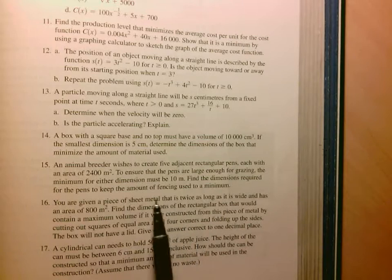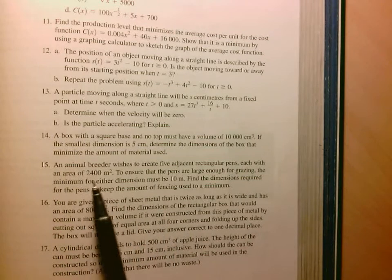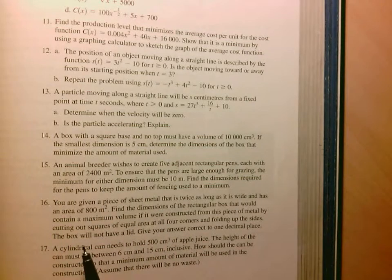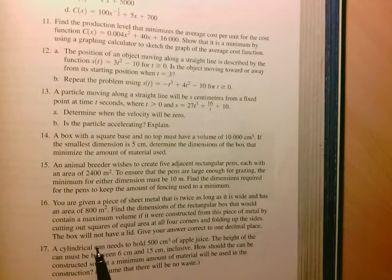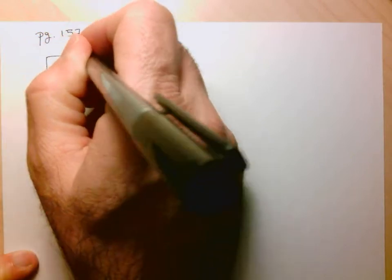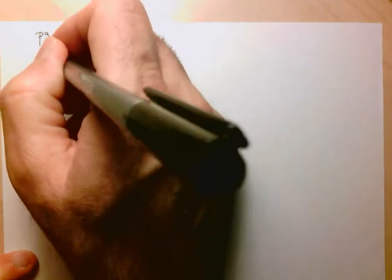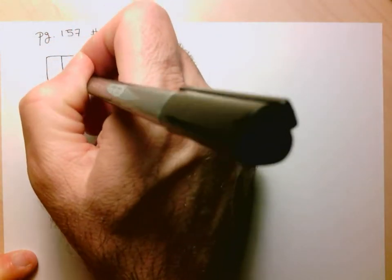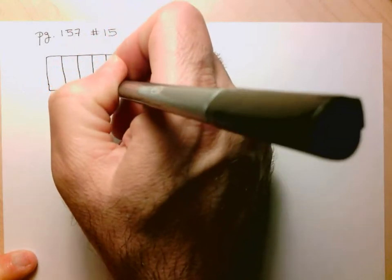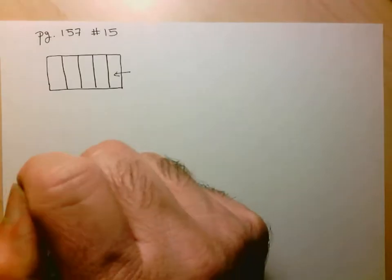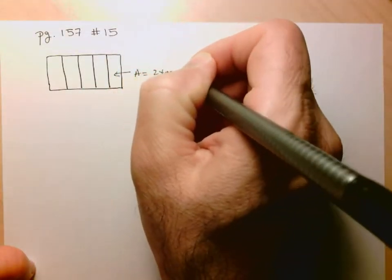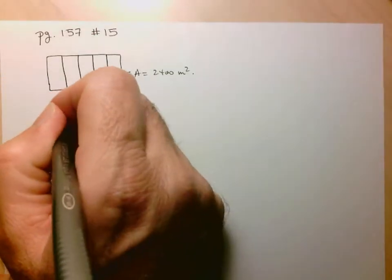So since we're looking to minimize the amount of fencing, we should be thinking perimeter. And they are giving us this constraint that the area of each has to be 2400 meters squared. So it seems likely that we'll have to use that. So we'll just move this out of the way. And let's try to solve this.